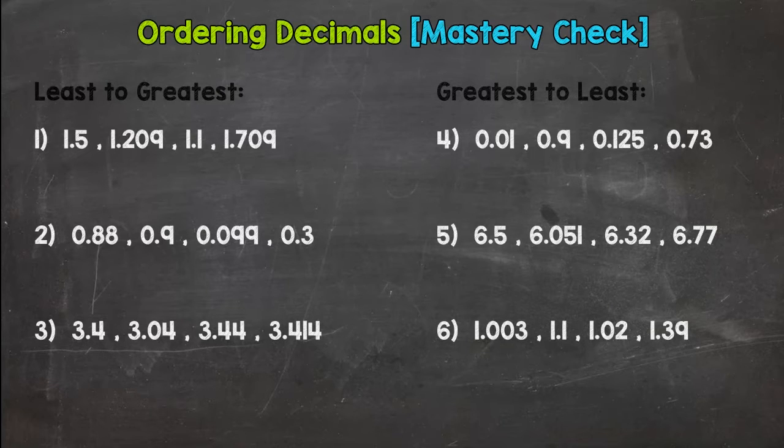So when I say pause, you're going to write these six down and then when you're ready to check your answers, press play and you'll check your answers with mine. Remember, line them up, use placeholder zeros, go left to right. Okay, here we go, press pause.